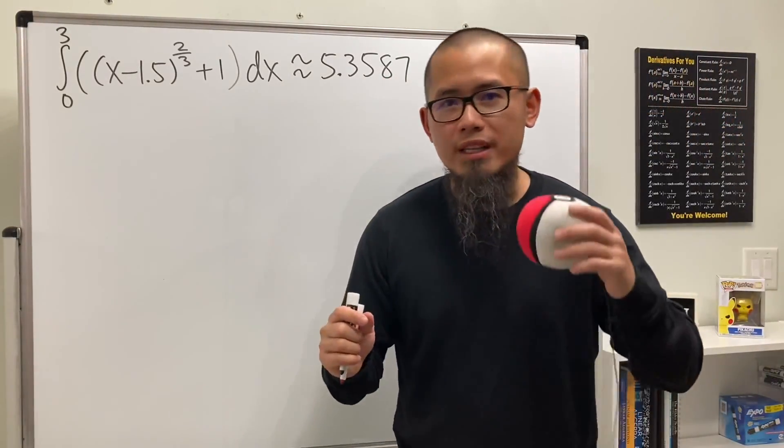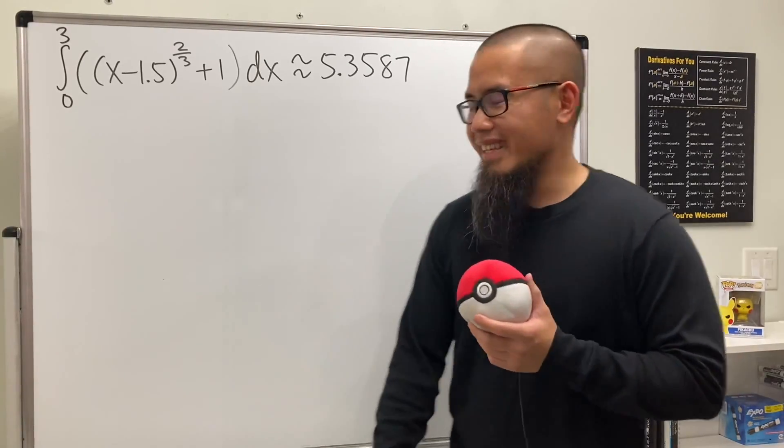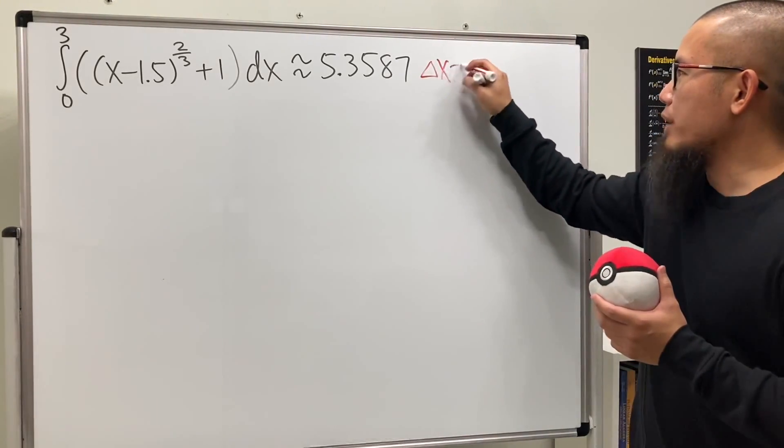In this video, we will compare the midpoint rule and the trapezoidal rule when n equals 3 and see who wins. Let's get started.